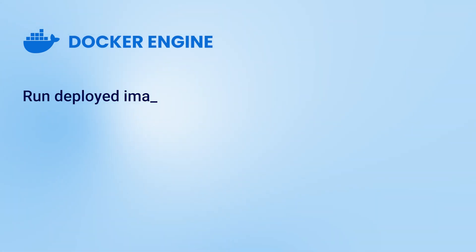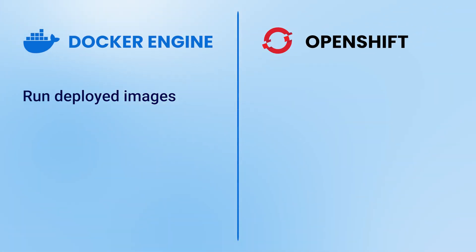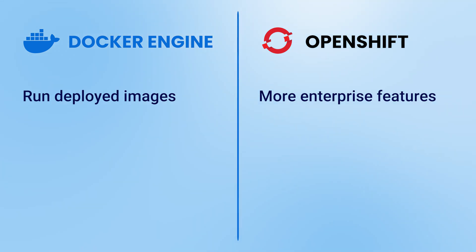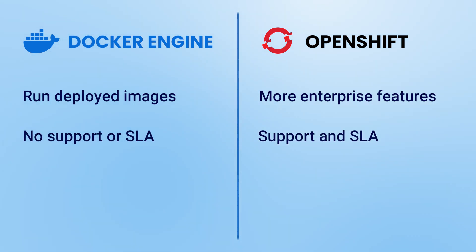Before we get into how Docker and OpenShift work better together, I want to address the misconception that they are competitors. This narrative is likely related to the open source project Docker Engine. Docker Engine can be used to run deployed images like OpenShift, but in no way does Docker Engine have the enterprise deployment features that OpenShift offers. Plus, Docker Engine by itself doesn't have support or an SLA offered. Now that we've cleared that up, here's how Docker Desktop, Docker Hub, and OpenShift work together to provide best-in-class software development for containers.